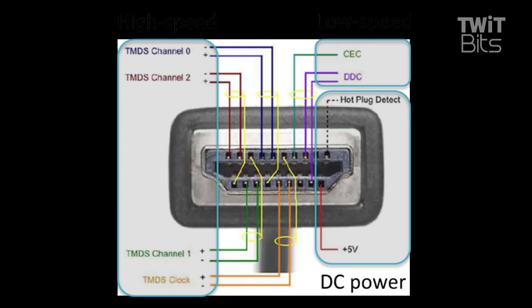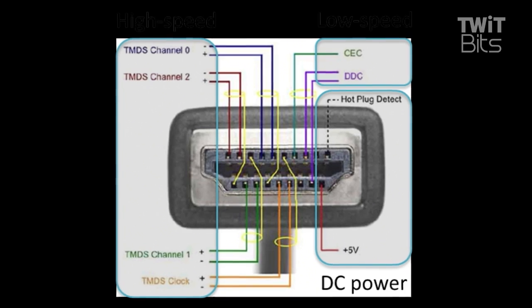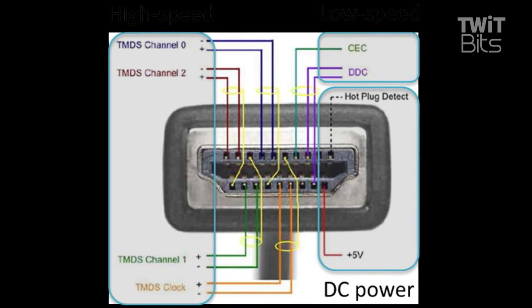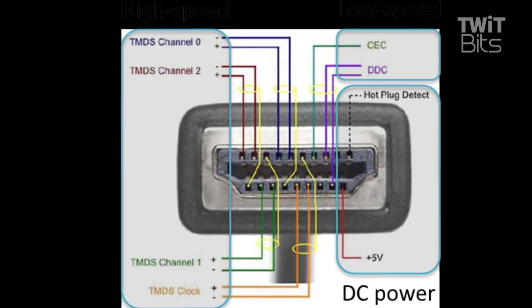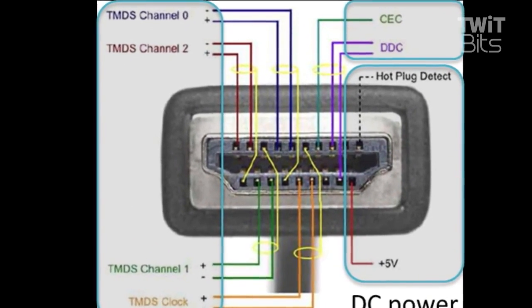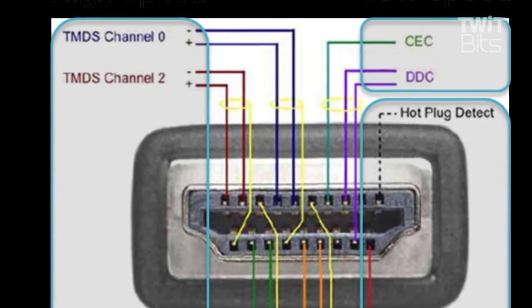So if you can pull up that first image, it gives you the pin-out of what the HDMI connector is. What HDMI is, is basically just a digital interface that sends audio, video, and all the ancillary control information as well. So it's sort of the extension of DVI, and it's giving you the best sort of high-quality picture you can get.